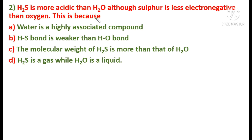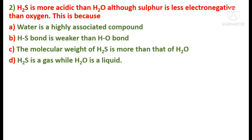We are told H₂S is more acidic than water though sulfur is less electronegative. The four options are: (A) water is a highly associated compound; (B) the H–S bond is weaker than the H–O bond; (C) the molecular weight of H₂S is more than that of water; and (D) H₂S is a gas while water is a liquid.